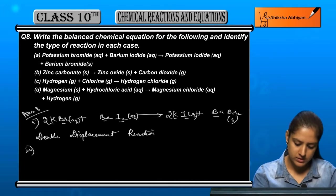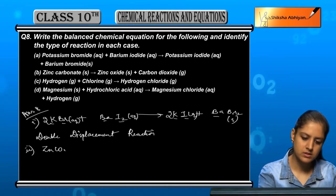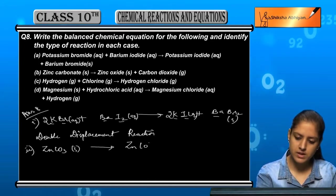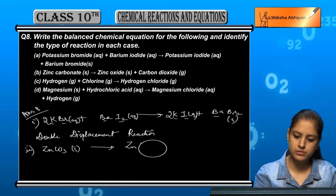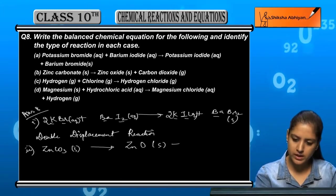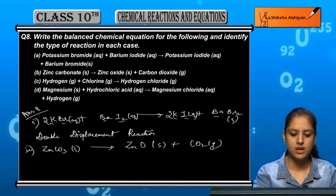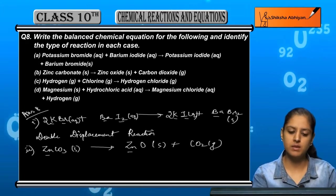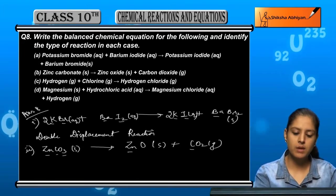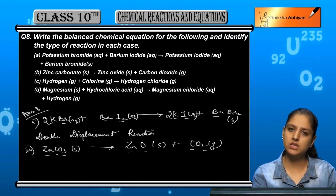Next, zinc carbonate, that is ZnCO3 which is a solid, gives us ZnO which is a solid again plus CO2 gas. Now, Zn and Zn are one each. C and C, carbon and carbon are one each. Here there are 3 oxygen and 2 plus 1, 3 oxygen. It is a balanced equation.